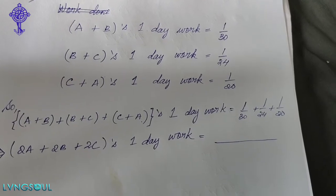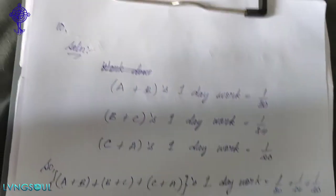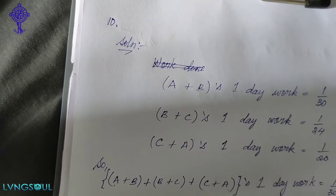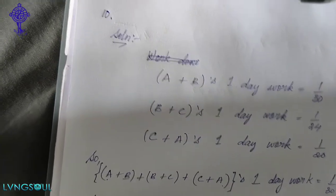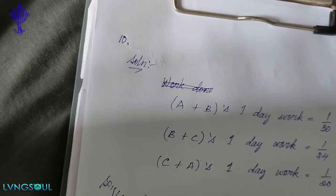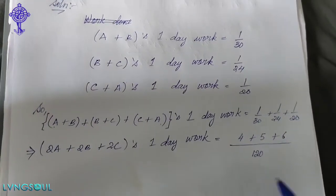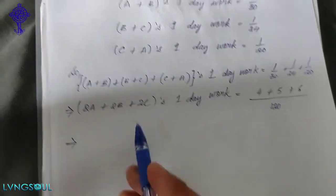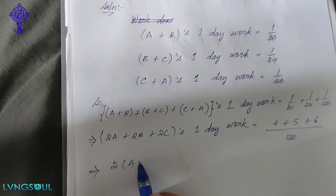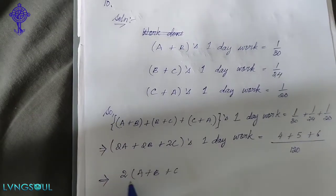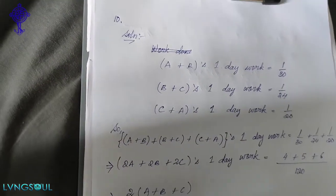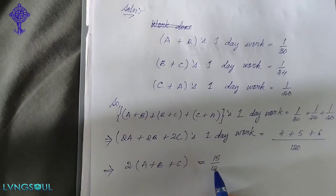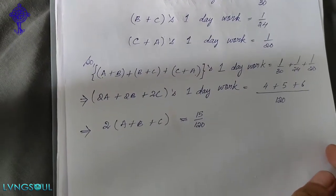LCM of 30, 24, 20. Computing: 4 plus 5 is 9, 9 plus 6 is 15. So 15 by 120. That gives 1 by 8. A plus B plus C one day work is 1 by 8.